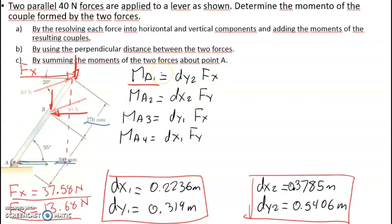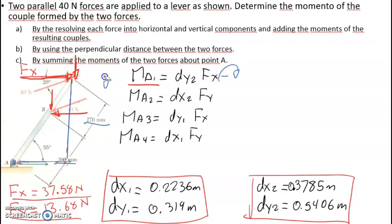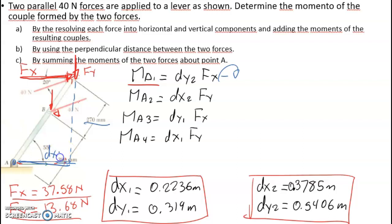For Moment A1, the force and distance interact about pivot point A — this force and this distance create a clockwise moment, which means it is negative. For Moment A2, Force Y interacts with distance dx2, and since that force pushes down, if the pivot point is A, this also creates a clockwise rotation — so that is also negative.